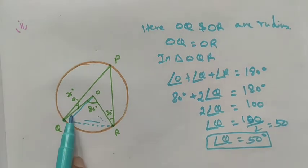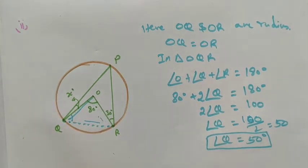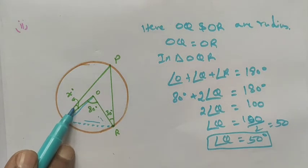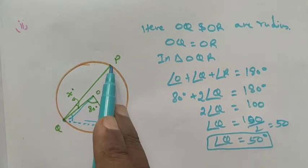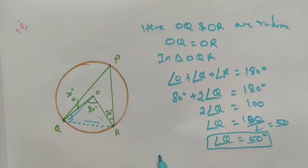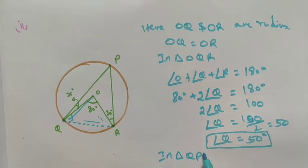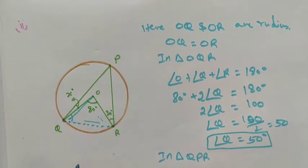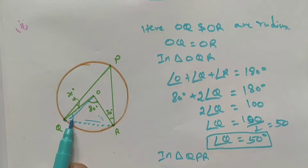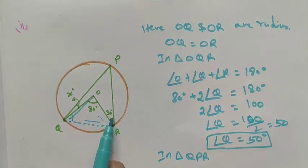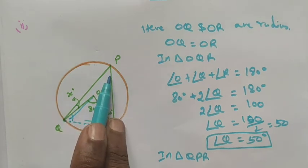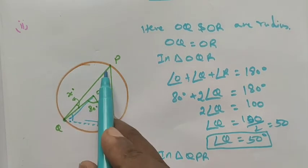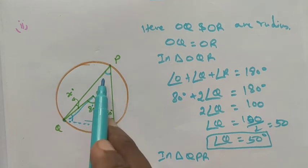Now we move to triangle QPR. In triangle QPR, this angle is 50, and we can see that angle Q is 50. This angle is 50, and this angle is 50 plus x. This angle is 50, and this angle is 50.